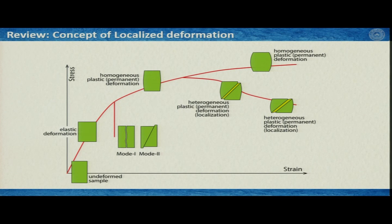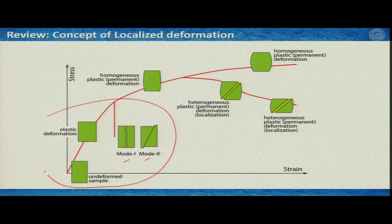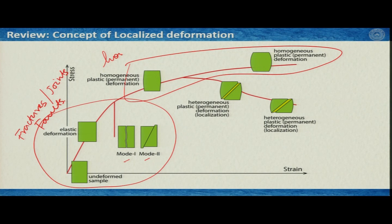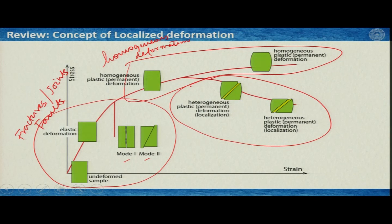As a review, we know that at low pressure and temperature we generate mode 1 or mode 2 fractures. Rocks generally show brittle deformation attributed to fractures, joints, and faults. These are essentially homogeneous deformation. At high pressure and temperature this part — which we are going to learn in this and the next lecture — represents heterogeneous or localized deformation.